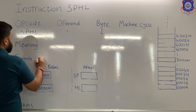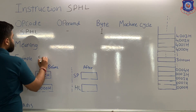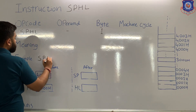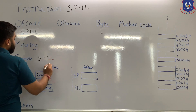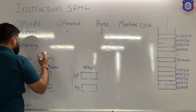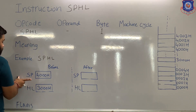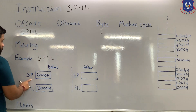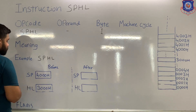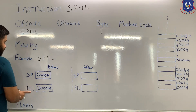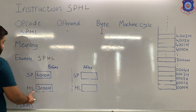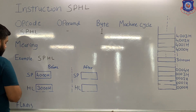Let's see an example. The instruction itself is SPHL. Suppose before the execution, the stack pointer contains 4000H, and the HL pair contains 3000H.